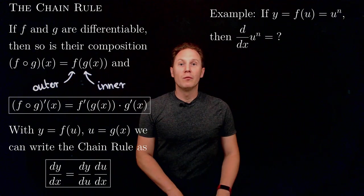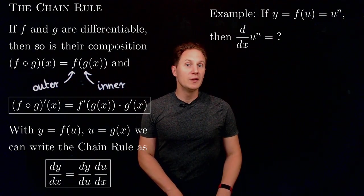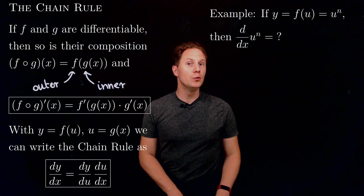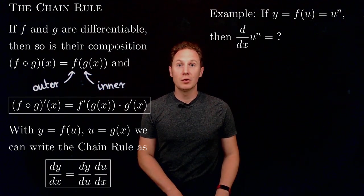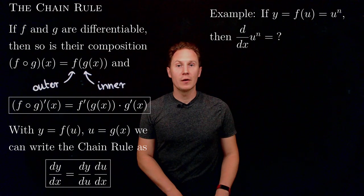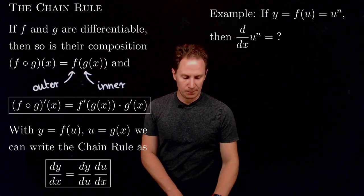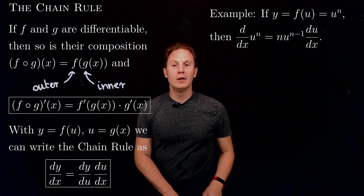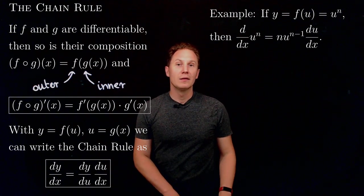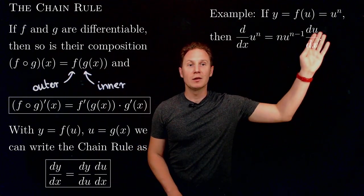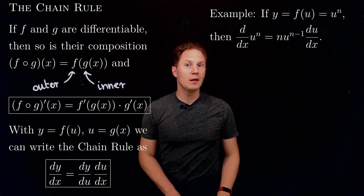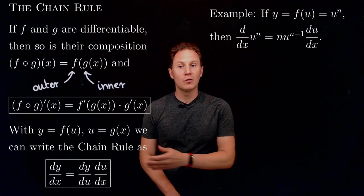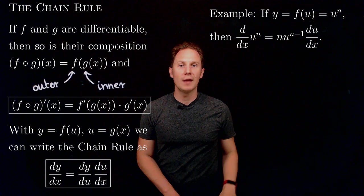For example, consider y equals f of u equals u to the n, and consider what happens when we differentiate this function u — that is a function of the independent variable x — with respect to that variable x. Using the chain rule in Leibniz's notation, we compute the derivative of y with respect to u, that is the derivative of u to the n with respect to u, which by the power rule gives us n times u to the n minus 1, and that is multiplied by du over dx.